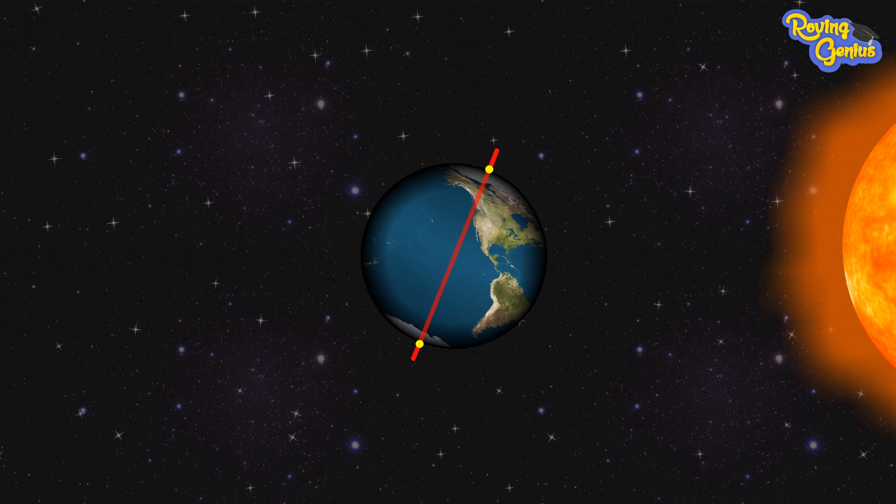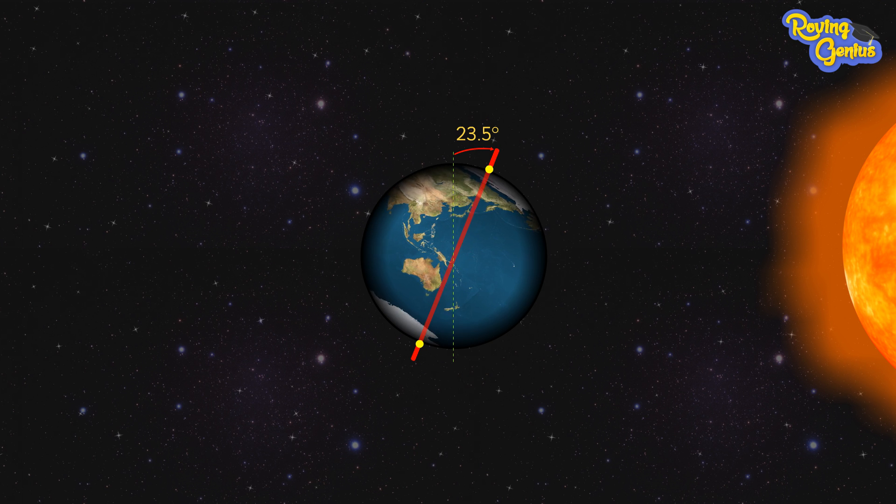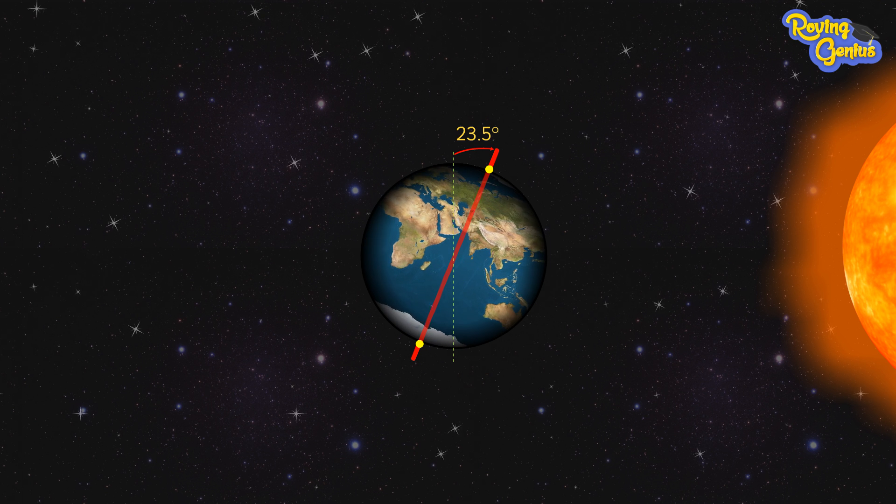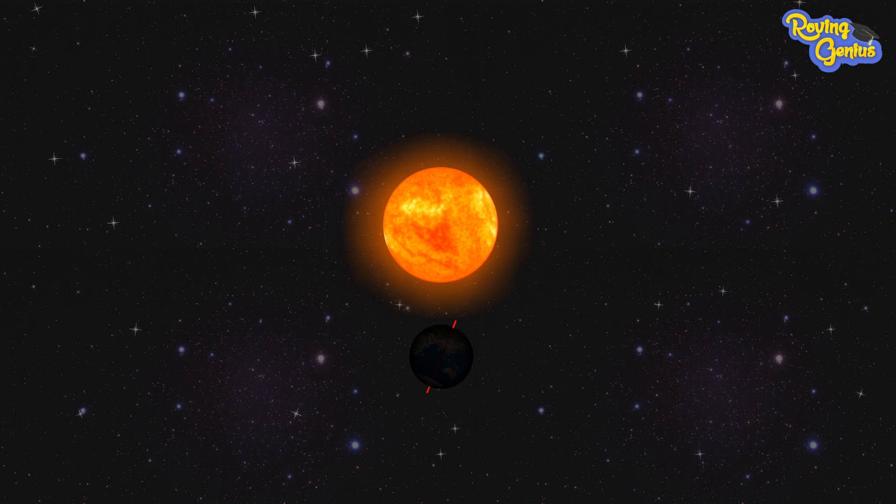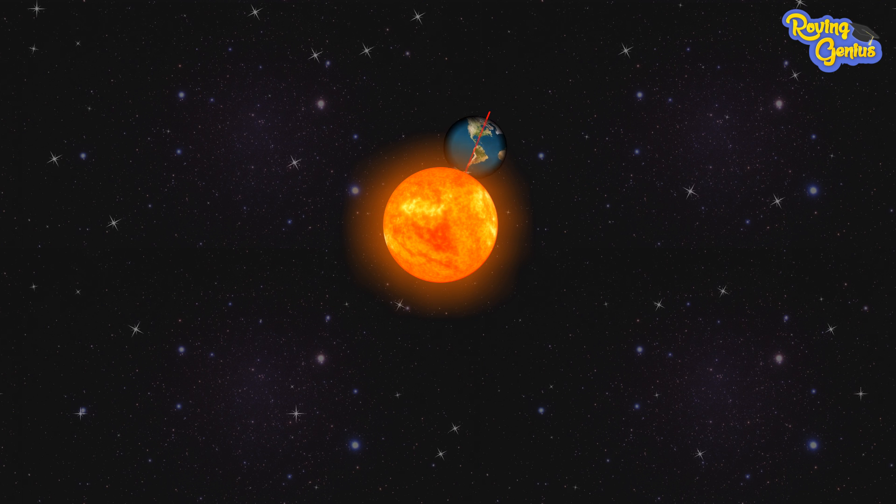The Earth spins tilted at an angle of 23.5 degrees and orbits around the Sun. This journey around the Sun takes one year to finish.